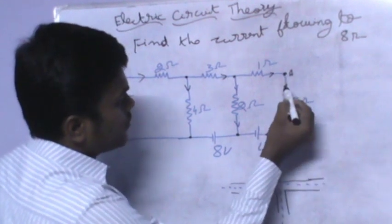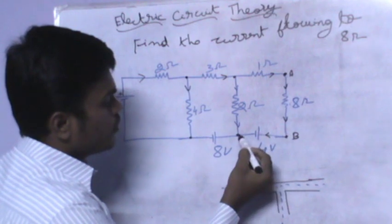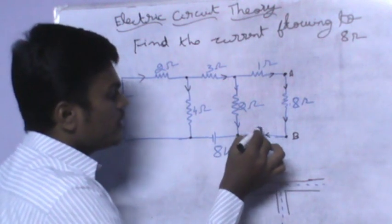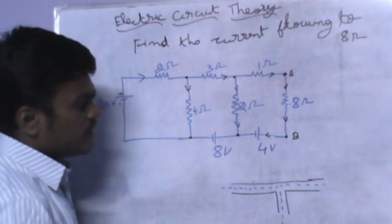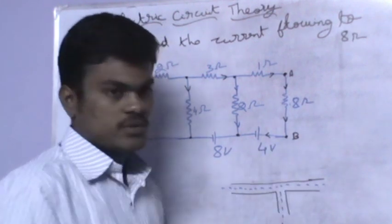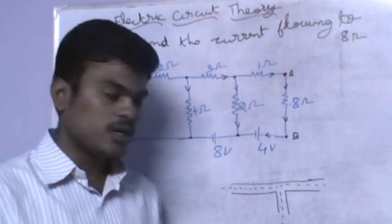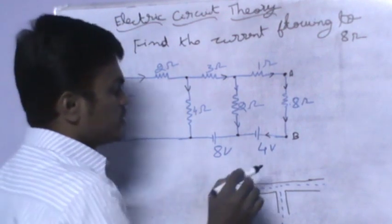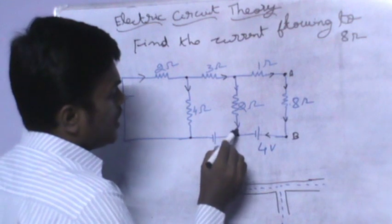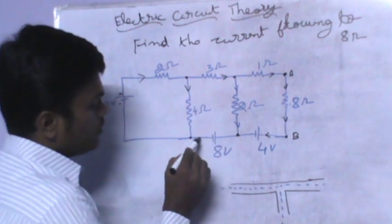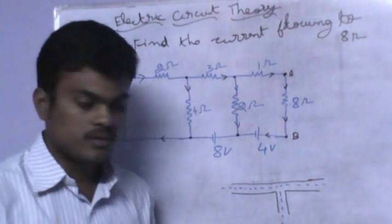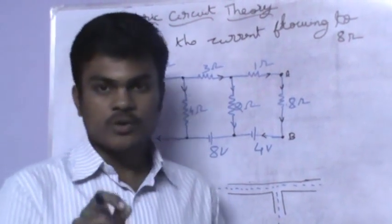The current reaches the 8 ohm resistor and then reaches 4 volt. An important point here: it is not necessary to see how the current flows through the voltage source, or whether it is positive or negative. The current just passes the voltage source, reaches a branch, flows upwards in the opposite direction, reaches 8 volt, and comes back. This is the current distribution.